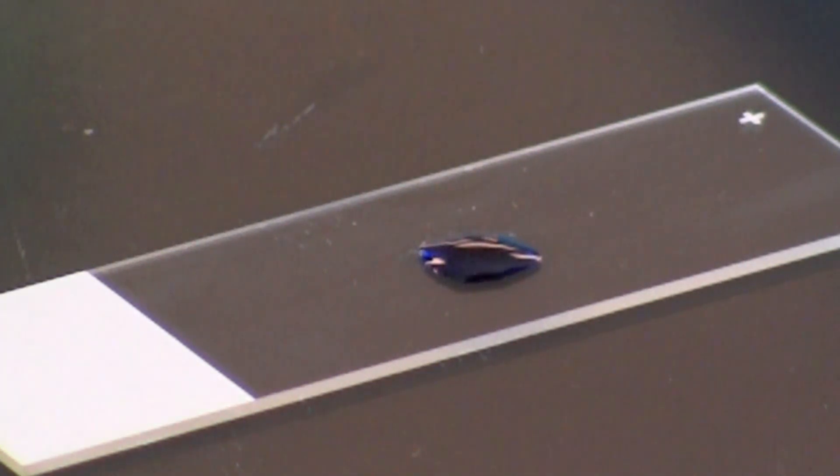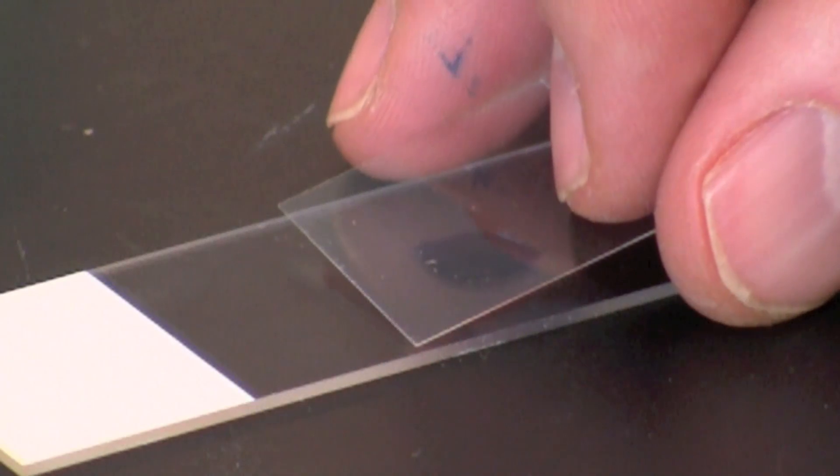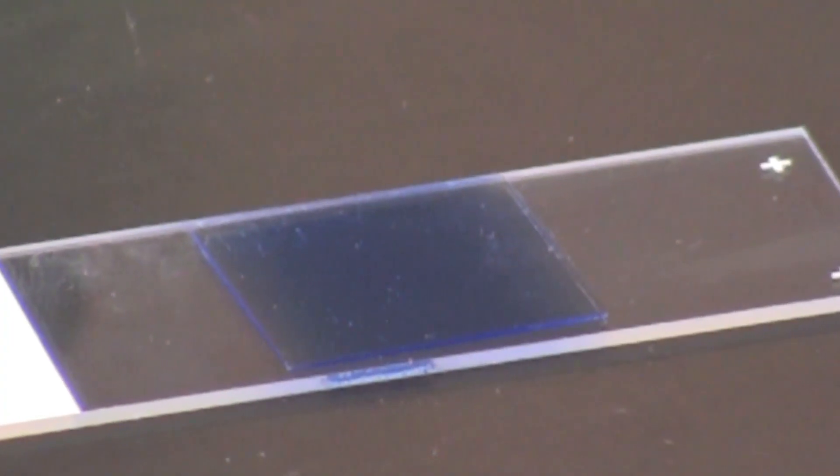Prepare the wet mount by lowering a coverslip over the stain, starting at a 45 degree angle. Avoid trapping bubbles under the coverslip.